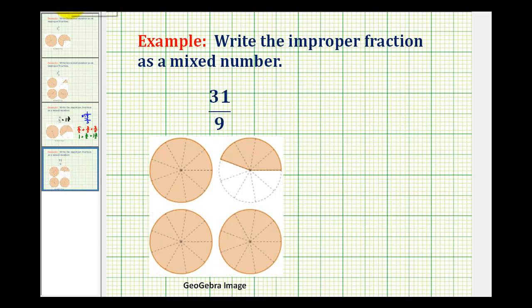Let's try another example. Here we want to convert thirty-one-ninths to a mixed number. So we have thirty-one divided by nine.